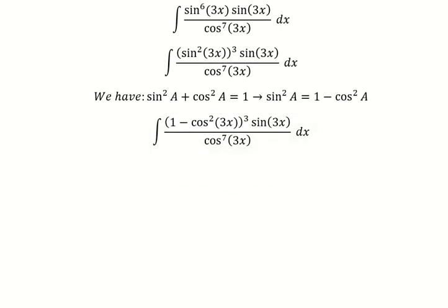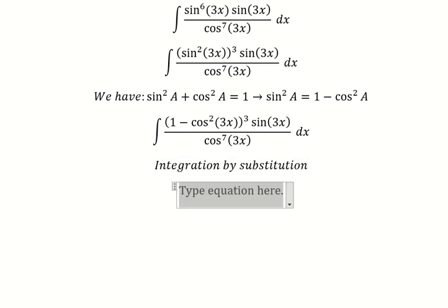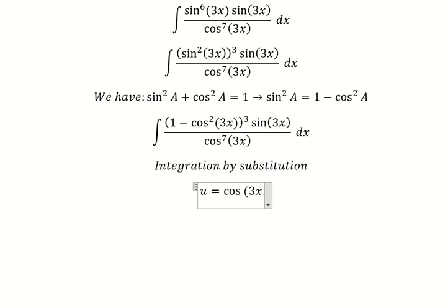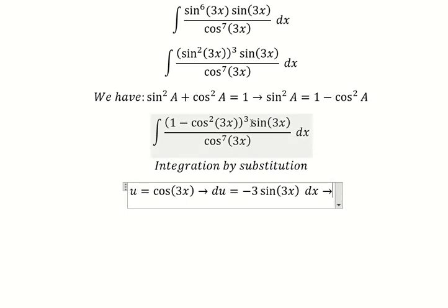And now we can use integration by substitution. So I will put u equals to cosine 3s. Later we need to do the first derivative for both sides, and we have like this. Because we don't have negative number three, so I will put this one — we need to divide both sides by negative number three.